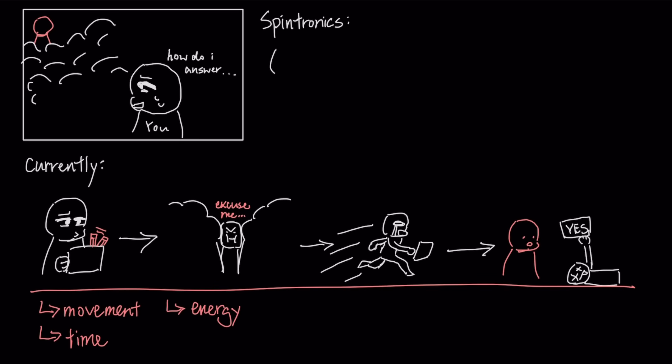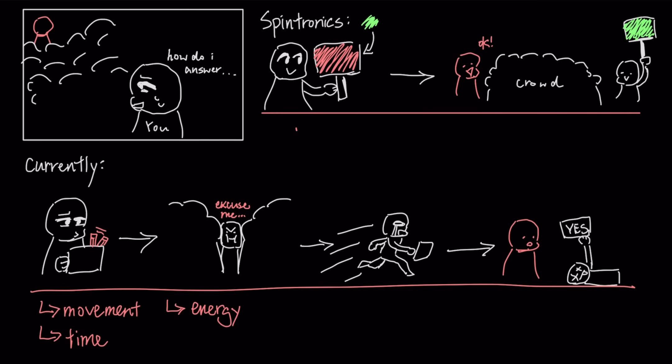Spintronics is like standing in the corner of the room and simply holding up a sign that is red on one side and green on the other. If you want to say yes, you just flip the sign. You have sent the exact same information, but because you utilized the state of the object rather than its position, you did it instantly with almost zero effort.